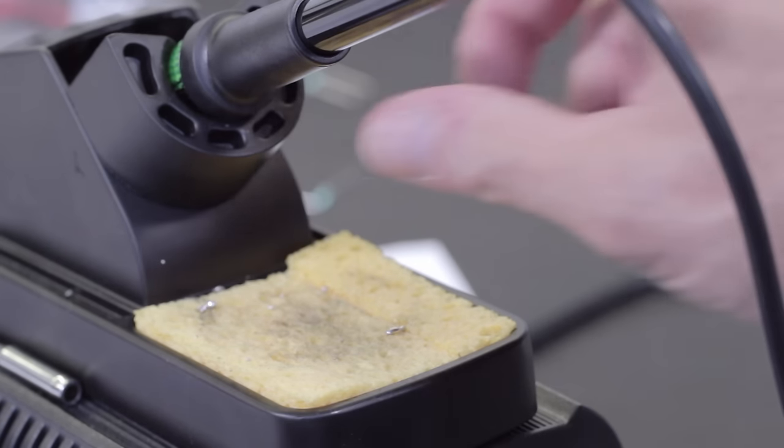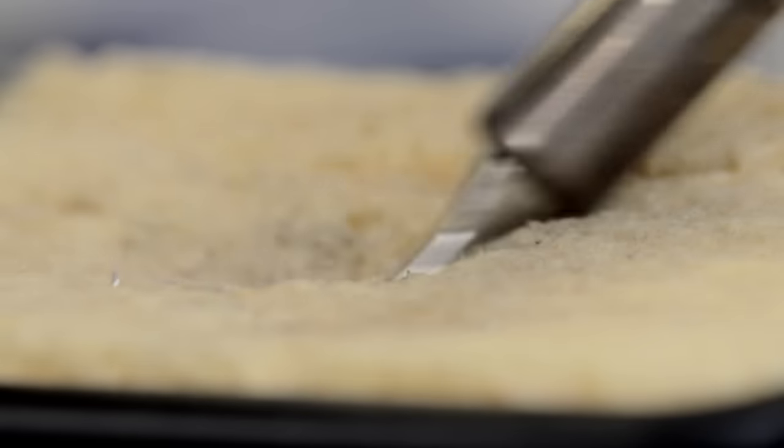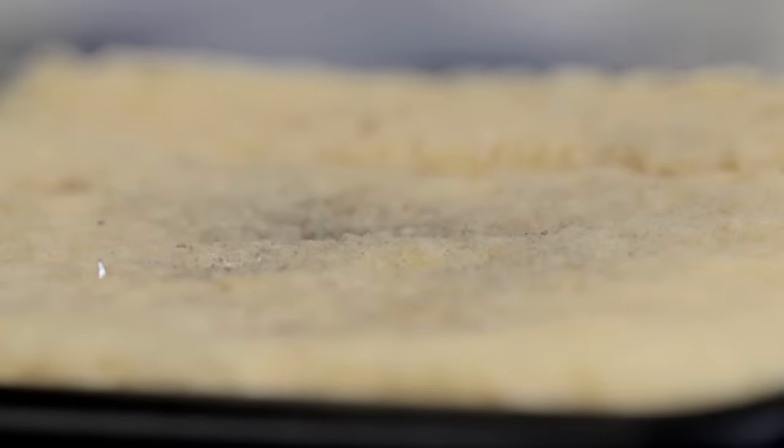When the iron is up to temperature first clean the tip of the iron on the wet sponge on the iron holder to remove any excess solder and flux residue that might be there.